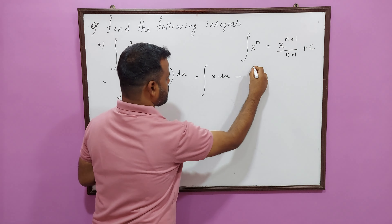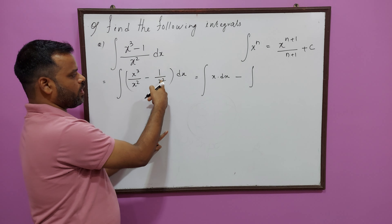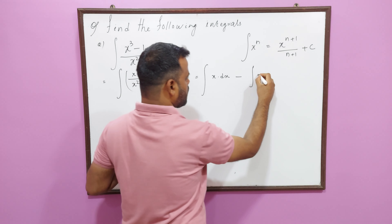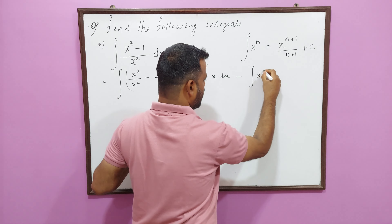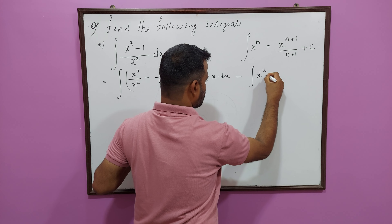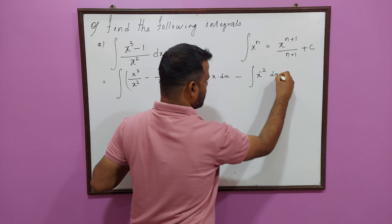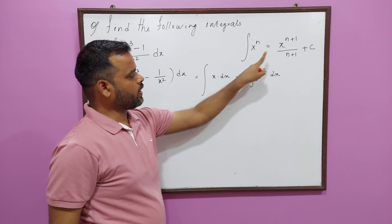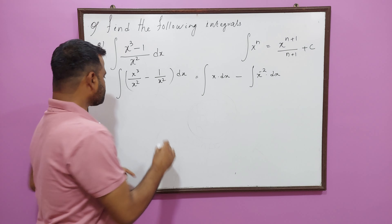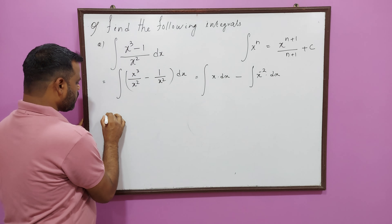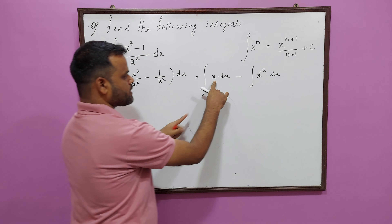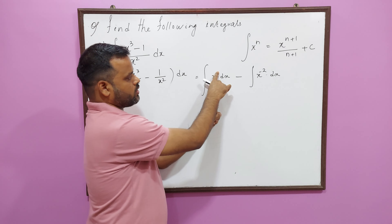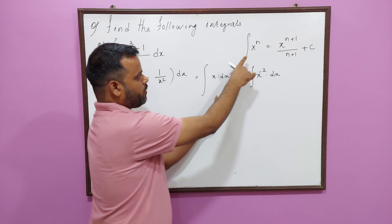First of all, let us recall what is the integration of x to the power n. Its value is x to the power n plus 1, divided by n plus 1, plus constant C.